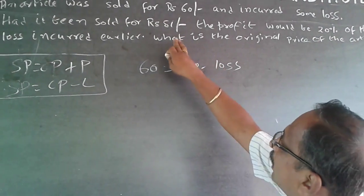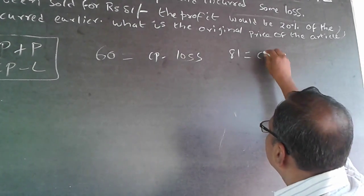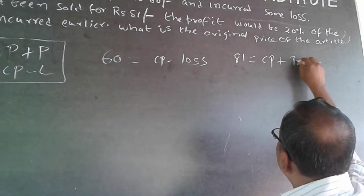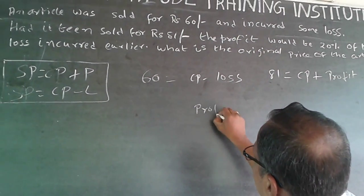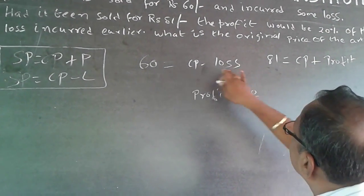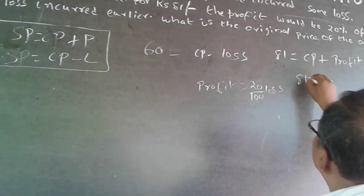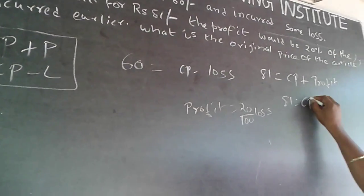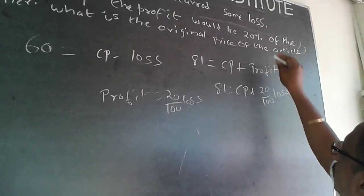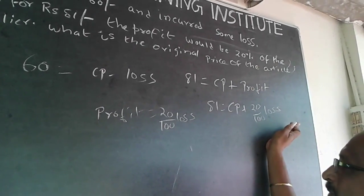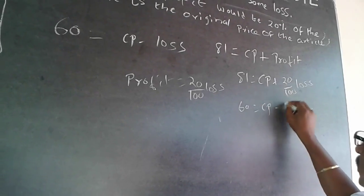The next statement: had it been sold for Rs 81, it makes a profit. So 81 = CP plus profit. And this profit equals 20/100 of the loss incurred earlier — meaning profit = 1/5 of loss. Substituting: 81 = CP + (20/100) × loss.